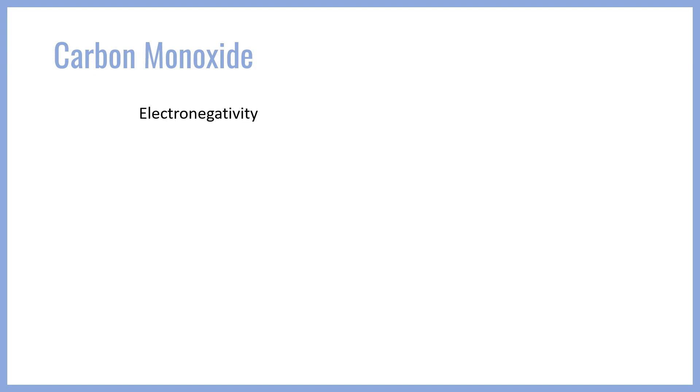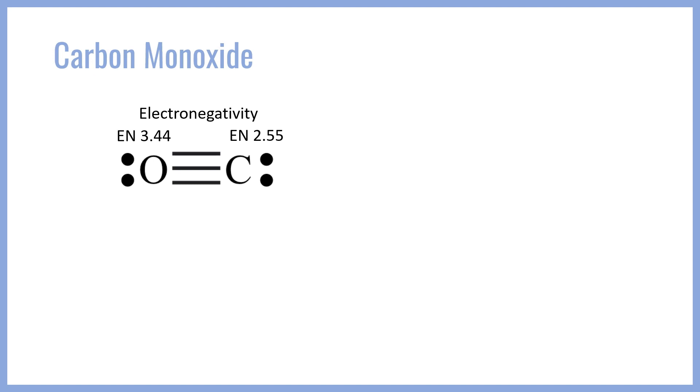Carbon monoxide gives us a case of how we balance electronegativity and resonance effects together. Generally, formal charge effects trump inductive effects due to electronegativity, but it varies case by case, so we need to examine CO independently. Starting with electronegativity: oxygen is significantly more electronegative than carbon — about one electronegativity unit higher. So we expect a very strong inductive dipole pointing towards oxygen, especially because we have a triple bond, meaning six whole electrons can be pulled by oxygen away from carbon.